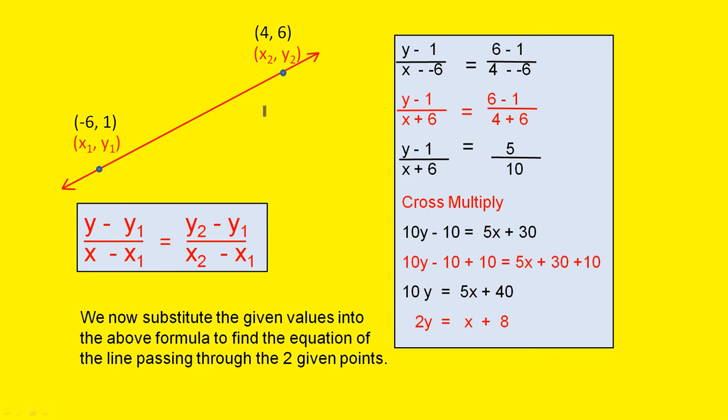Now here is the line repeated. All the information is the same. There's the very important formula there. We now substitute the given values into the above formula to find the equation of the line passing through the two given points. Now, y minus y1, which is y minus 1. And there it is there. Y minus 1. See, because y1 is 1.